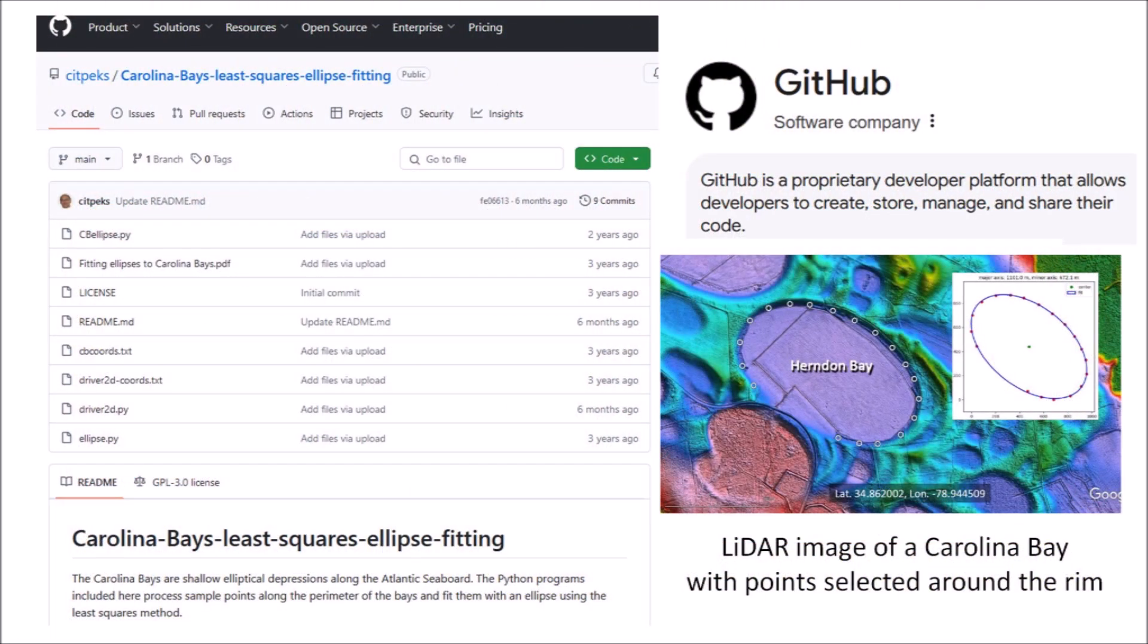In 2022, I uploaded to GitHub a Python program that fits ellipses to the Carolina Bays by the least squares method. GitHub is a proprietary developer platform that allows developers to create, store, manage and share their code. My intention was to allow geologists and other scientists to convince themselves that well-preserved Carolina Bays have a mathematically elliptical geometry. The program outputs the dimension and the azimuth of the ellipse, but up to now the program has not provided a goodness of fit measure.